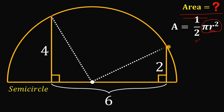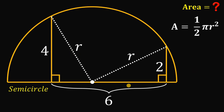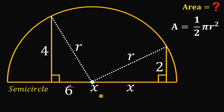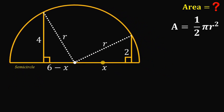From this point to the center of the circle, the measure of this segment must be equal to the radius of this semicircle. Since all radii are equal, this other segment is also r. From here, we're going to let this segment right over here be equal to x. Since the total distance between these two perpendicular segments is 6, the measure of this segment right over here must be equal to 6 minus x. Now we can find the value of r.